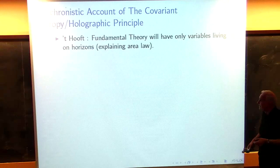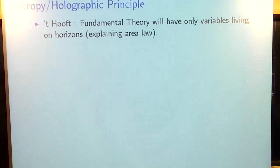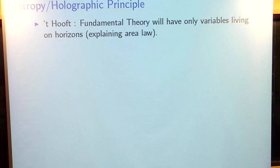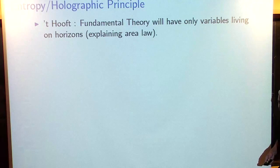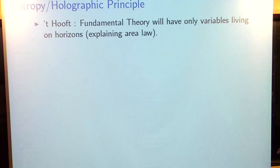I'm going to begin with an anachronistic account of the covariant entropy or holographic principle. I really think the first person who stated this in some sort of way was Toft. He said in the middle of a paper that he thought the degrees of freedom should be living somehow on horizons, on areas, and they had something to do with the shapes of the horizon. The basic idea was he wanted to explain the area law.